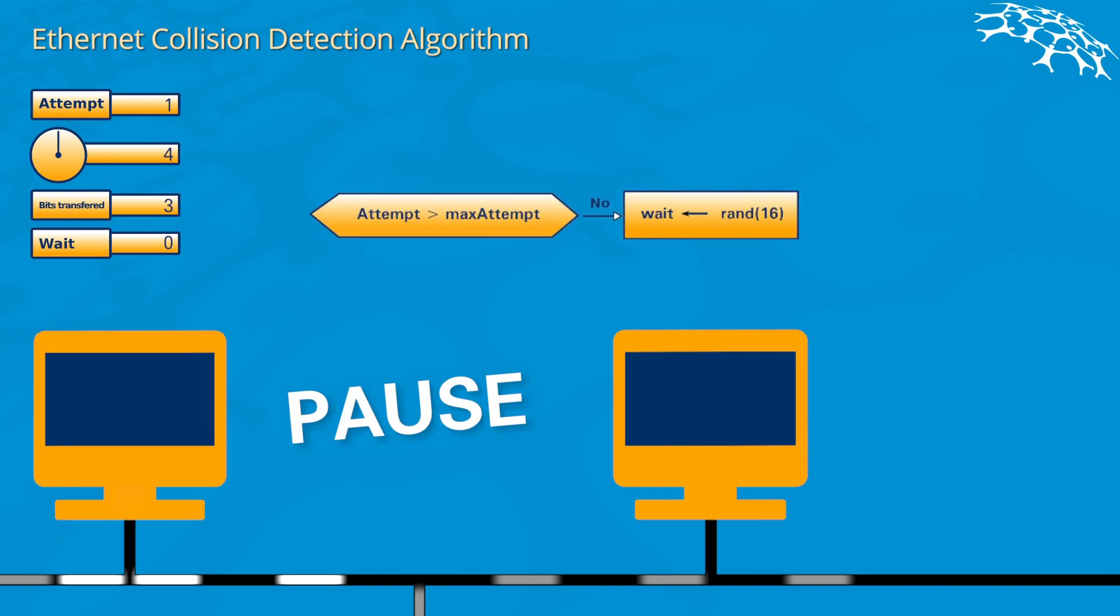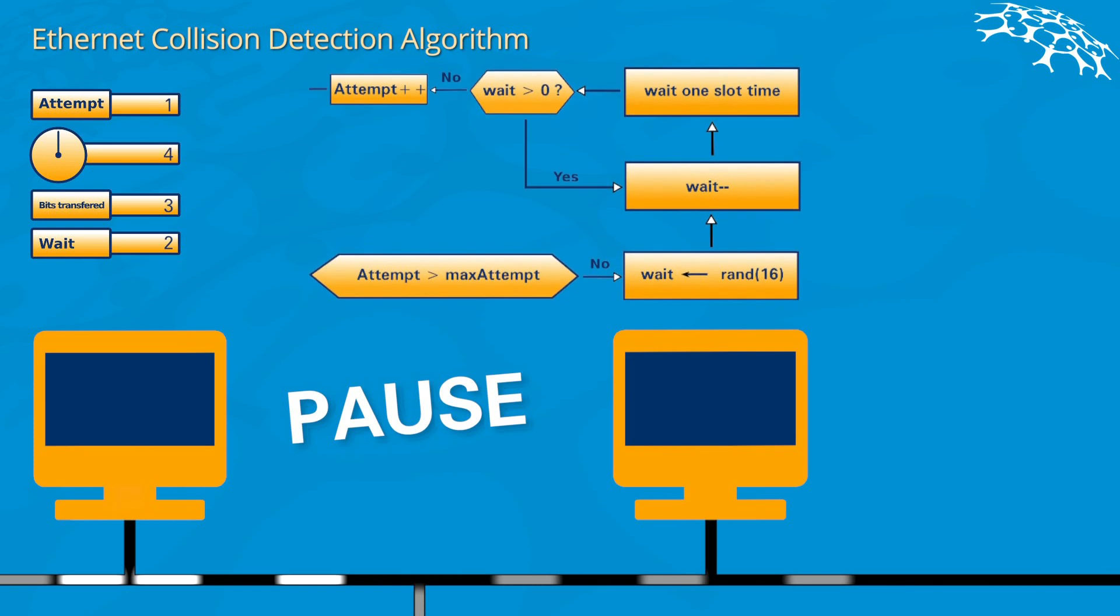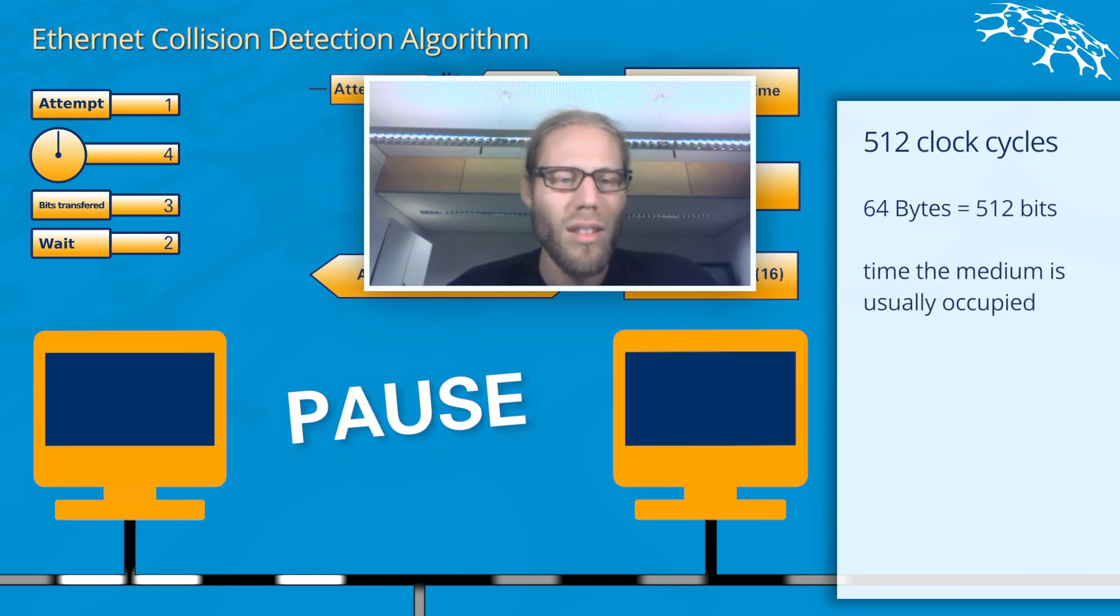What we do then is assign the wait counter a random number, usually shorter than 16. Once we have assigned the wait counter this number, we will wait for 512 clock cycles. Why 512? We have already seen that an Ethernet frame has to have at least 64 bytes, which is 512 bits.